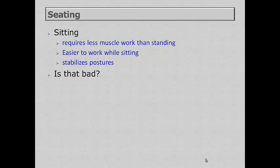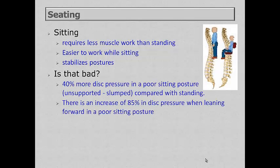So why could sitting be bad? When we sit, we tend to sit in an unsupported or slumped position, which can greatly increase disc pressure. If you tend to lean forward while seated, that can increase disc pressure by up to 85%. Notice in the picture on the right — the first spine shows the man standing with a nice S-curve, but when he assumes a seated position, that lumbar area is greatly flattened, causing increased disc pressure.